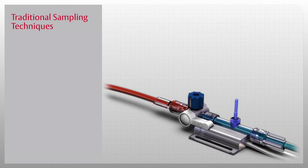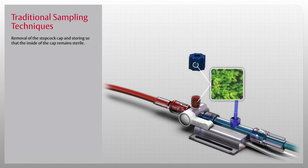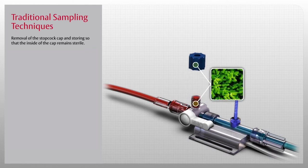Traditional sampling risks in the critical care setting involve removal of the stopcock cap and storing so that the inside of the cap remains sterile.